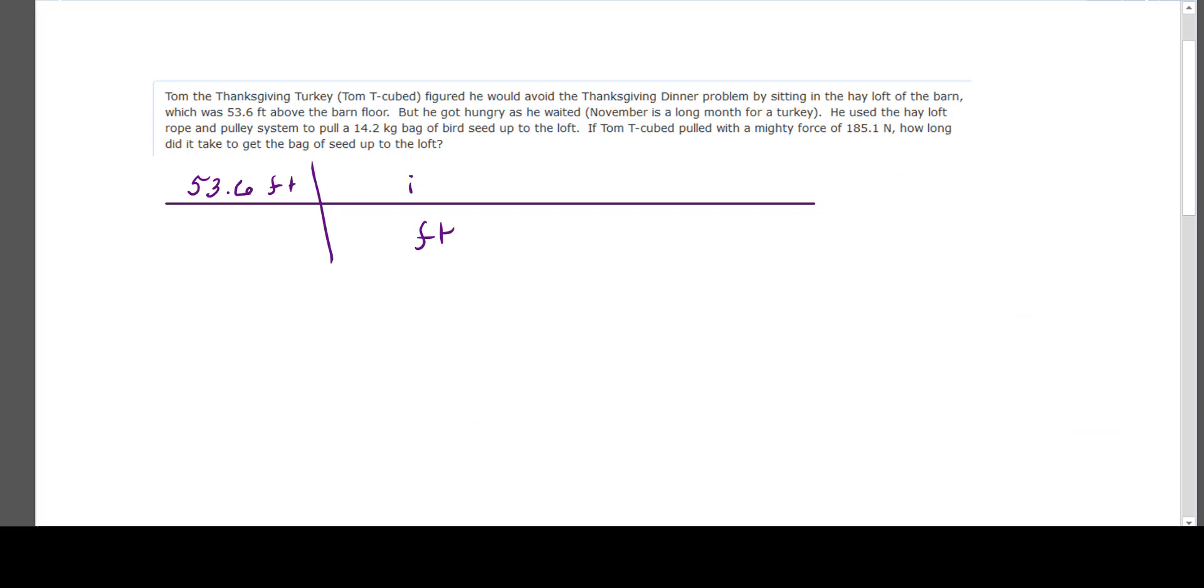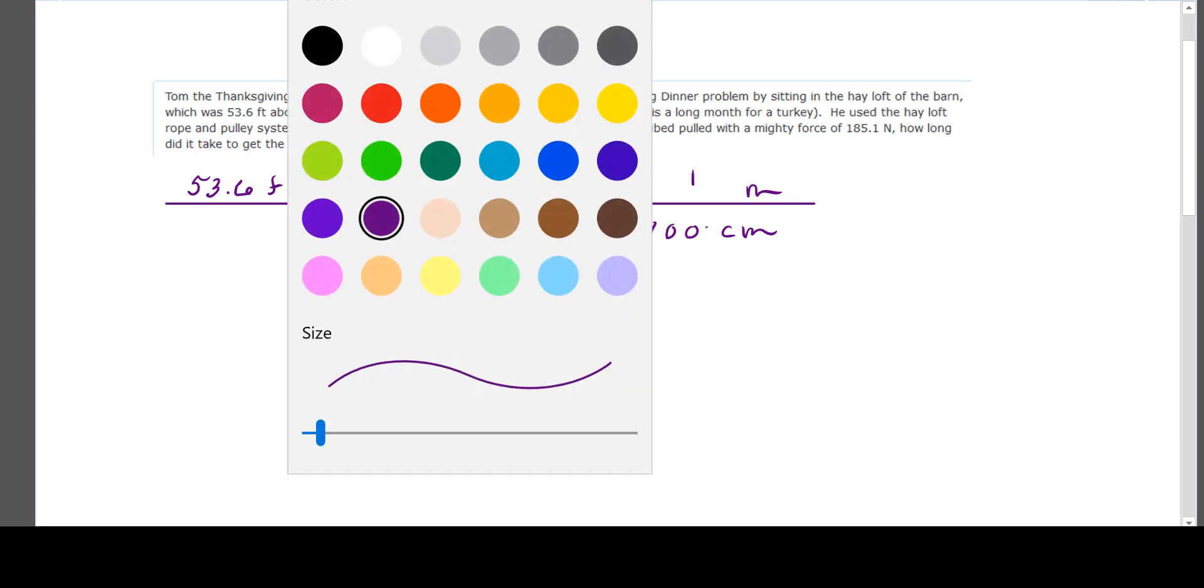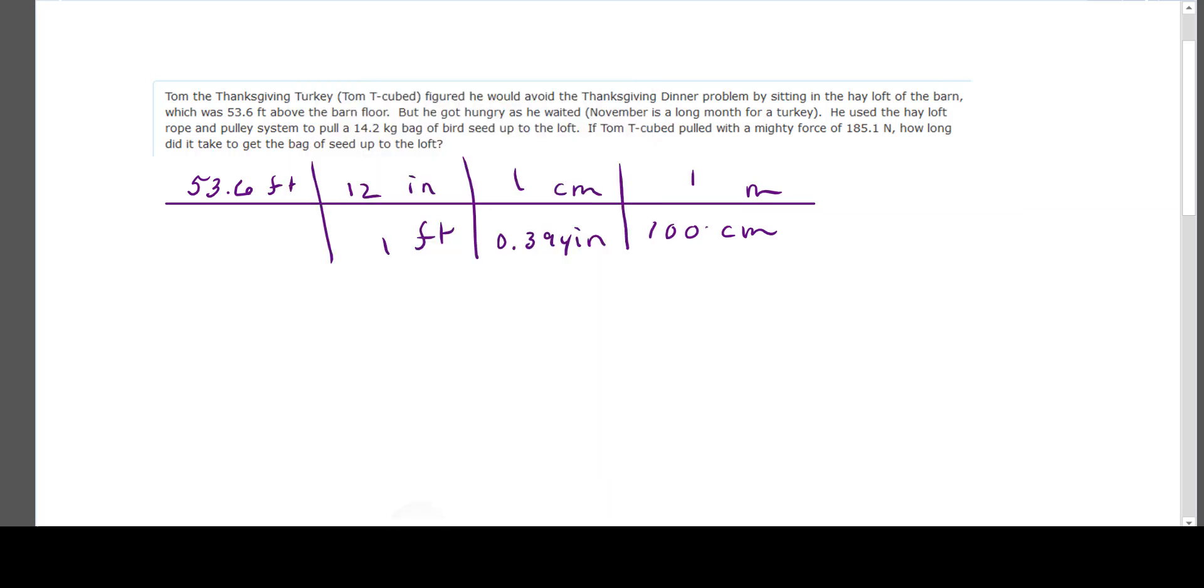But that doesn't get us our time. So, we have to use kinematic equations, which means we have to change that 53.6 feet into meters. I'm going ahead and showing my dimensional analysis. I work with my units first. I can convert feet to inches, inches to centimeters, centimeters to meters. Making sure my units all cancel out and everything is going to be okay. And the last unit standing is indeed meters. Then I can do my arithmetic and get 16.324 meters.